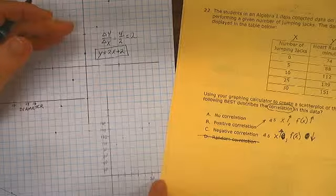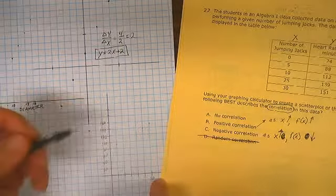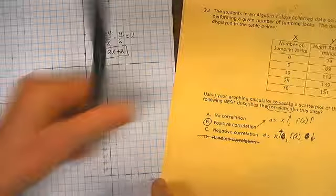So from our scatter plot, what do we see? As x increases, y increases. This would be positive correlation.